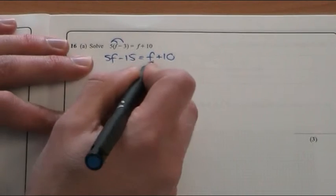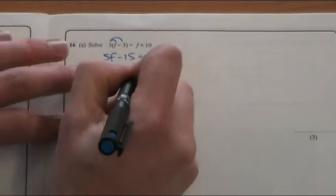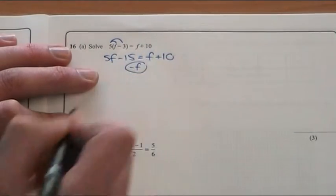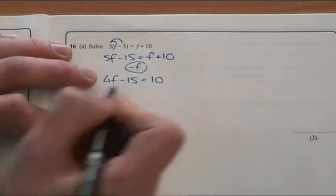Now we have f terms on both sides, so we're going to collect them on one. It makes sense to do it on the left because it has the most already. So I'm going to subtract an f from both sides to get rid of this one. That gives me 4f take away 15, which is equal to 10.